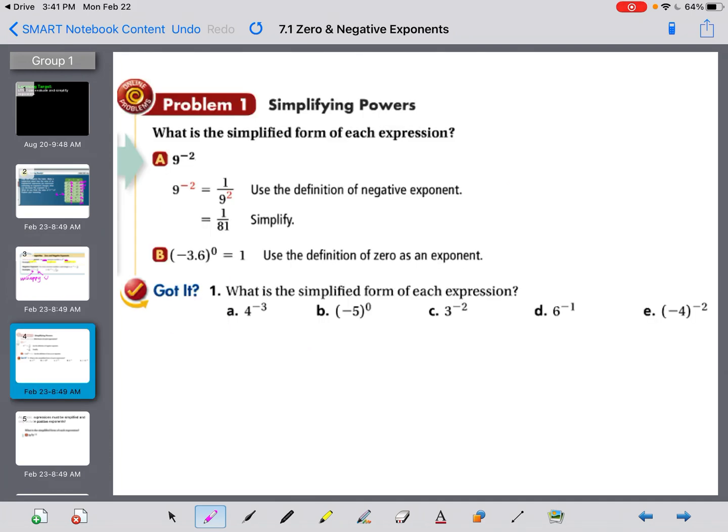So now we're just going to show how to simplify these. If they give us 9 to the negative 2nd power, this negative 2 tells us that we have to move it down to the bottom. So we have 1 over 9 to the 2nd power. Then to simplify it, I can actually figure out what 9 to the 2nd power is. Nothing happens to my 1, but since 9 to the 2nd power is 81, my final answer is 1 over 81.